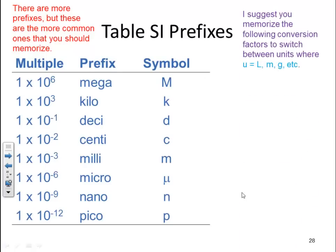I suggest you memorize the following conversion factors to switch between units, where the unit, let's call it U in this case, could be anything: liters, meters, grams, etc. It's a conversion factor from one prefix to the other prefix. One mega unit, be it megagram, whatever, is equivalent to one million of the unit. So I would memorize and say it as one megagram to a million grams. One kilo unit, let's say for example liter, is equivalent to 1,000 liters, or grams, meters, whatever the case may be.